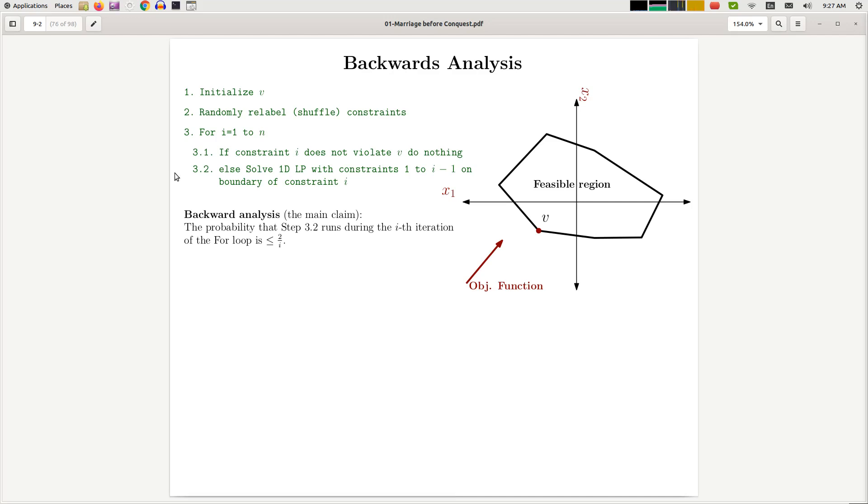Before going to the proof, let's study what step 2 does because that's actually the main thing that helps us prove this. Step 2 is shuffling constraints. Now the question is if you have n constraints, so here 9 constraints, 1, 2, up to 9, how do you shuffle them? Or how do you randomly permute them? There are a number of different strategies.